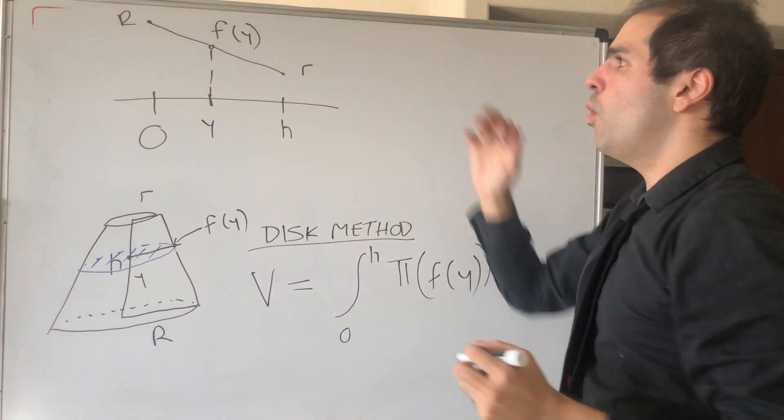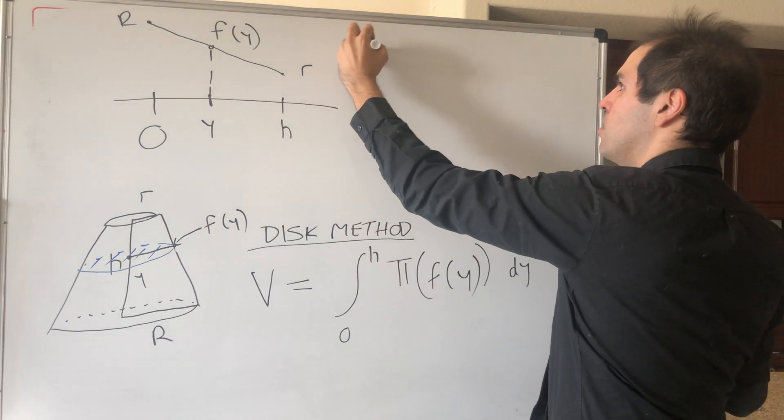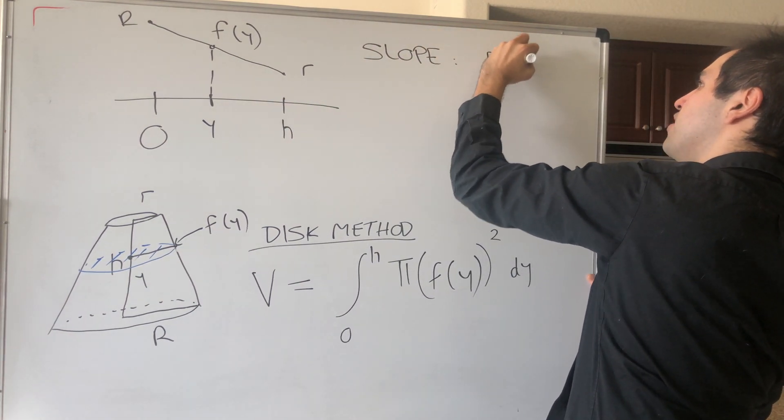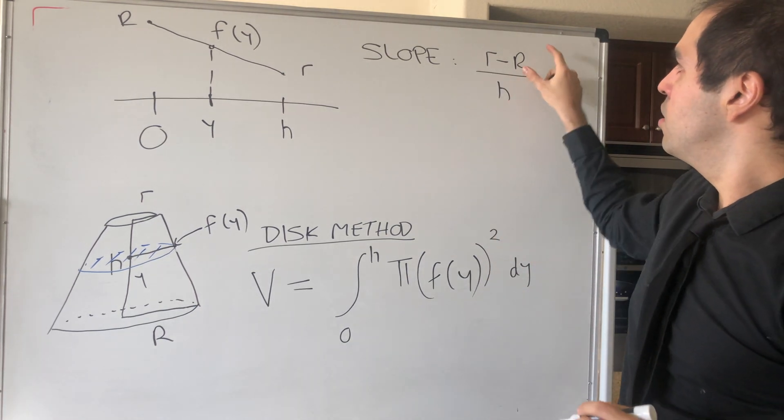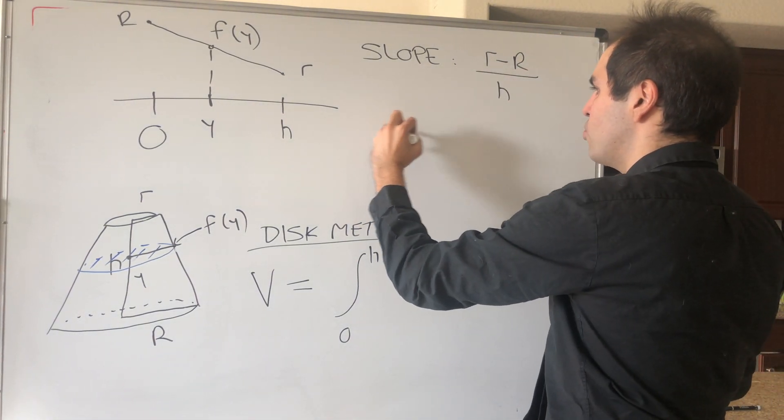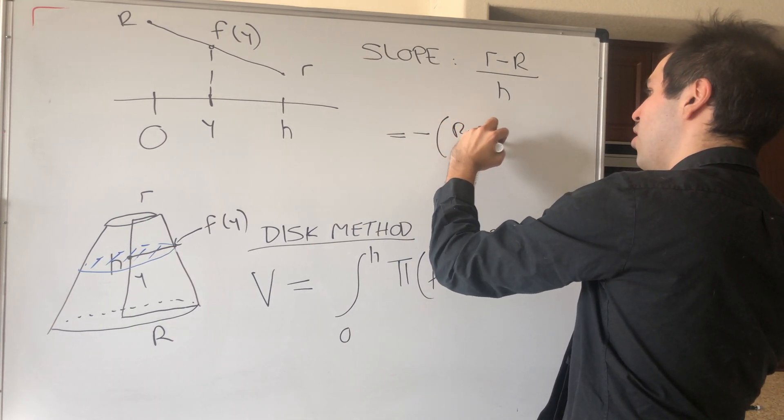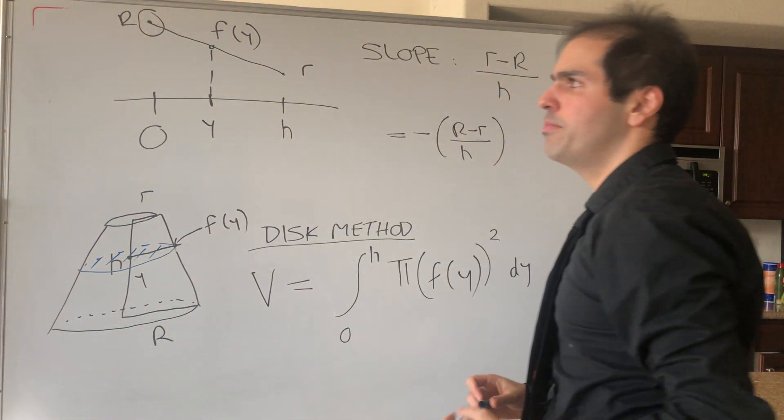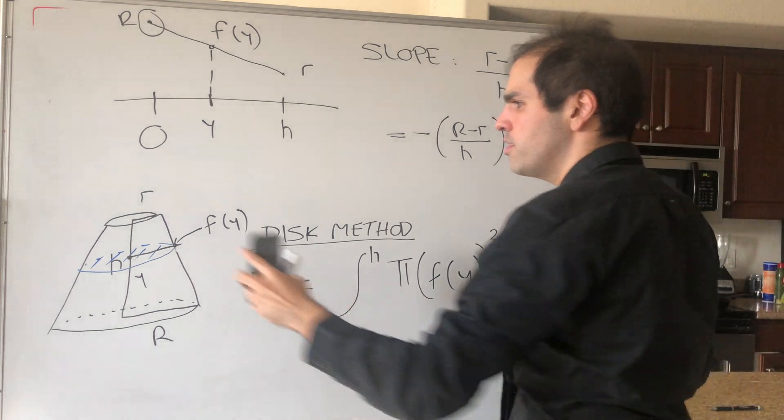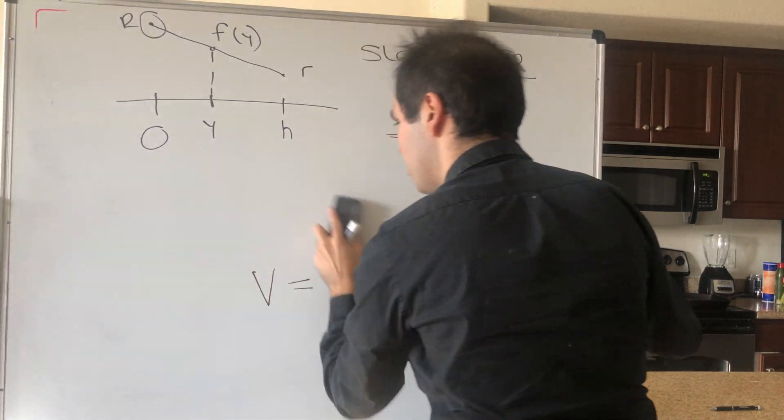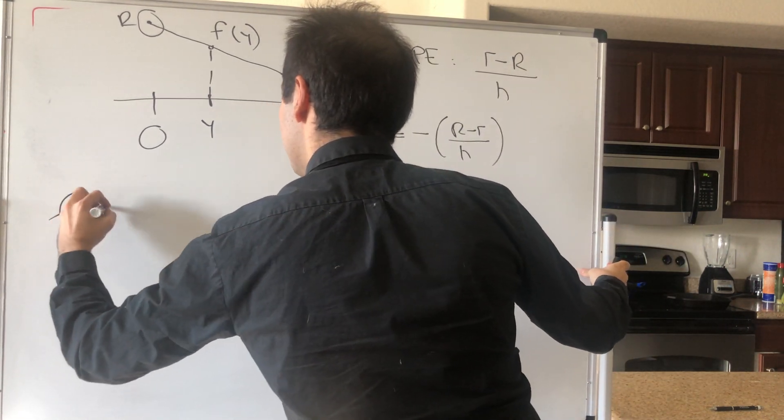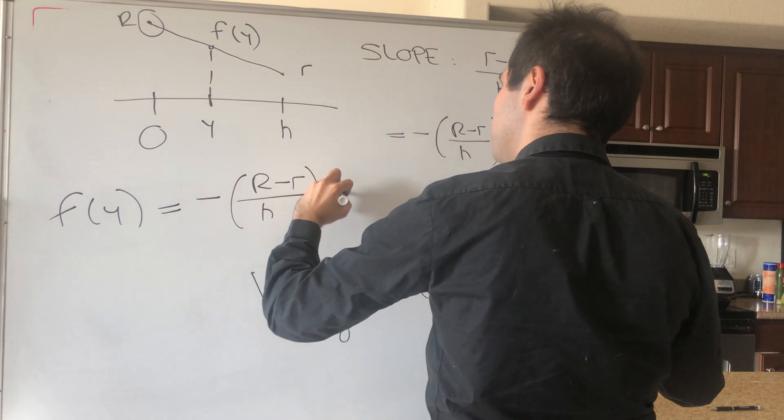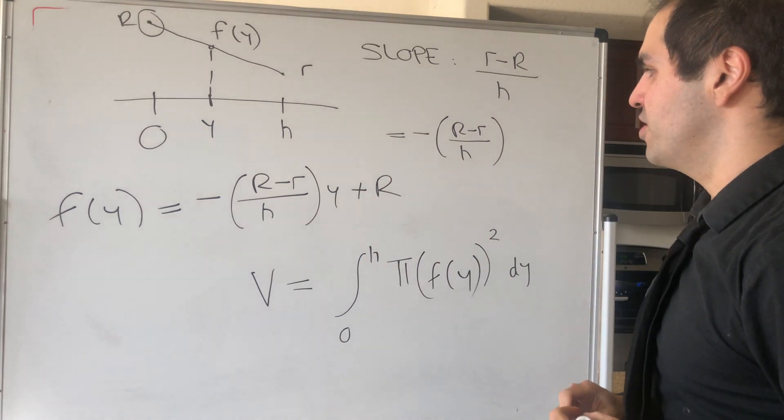The slope is little r minus capital R over h, but since we like positive quantities, let's write this as minus (R minus r) over h. So this gives us a slope, but notice the y-intercept here is R, so the equation simply becomes f of y, it's minus (capital R minus little r) over h times y and plus the y-intercept, which is capital R. So all we need to do now is square this and integrate this from 0 to h.